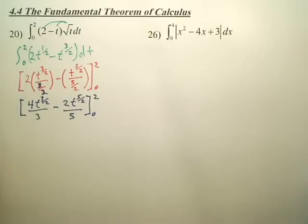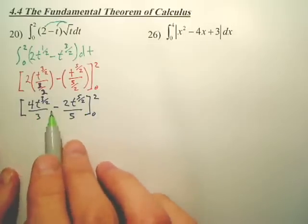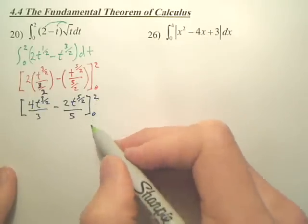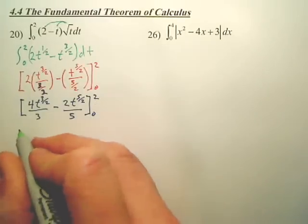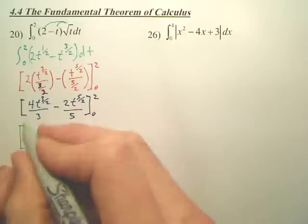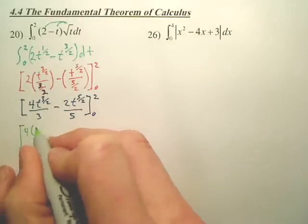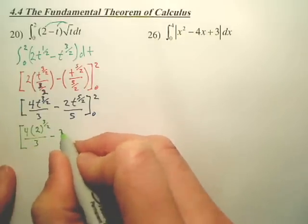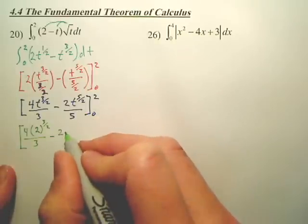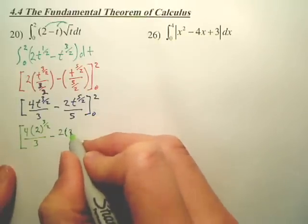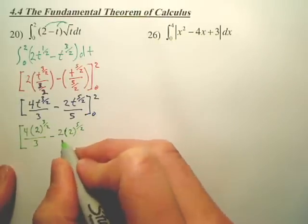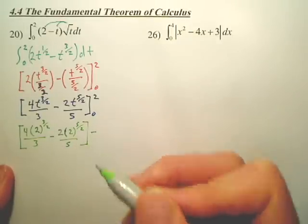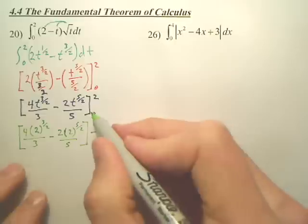Okay, now this is the integral 2 to 0. All you do is plug in 2, plug in 0, we're done. So 4, 2 to the 3 over 2 over 3 minus 2, 2 to the 5 over 2 over 5. Now, I'm going to make a little quick shortcut. What happens when you plug in 0 to all this?